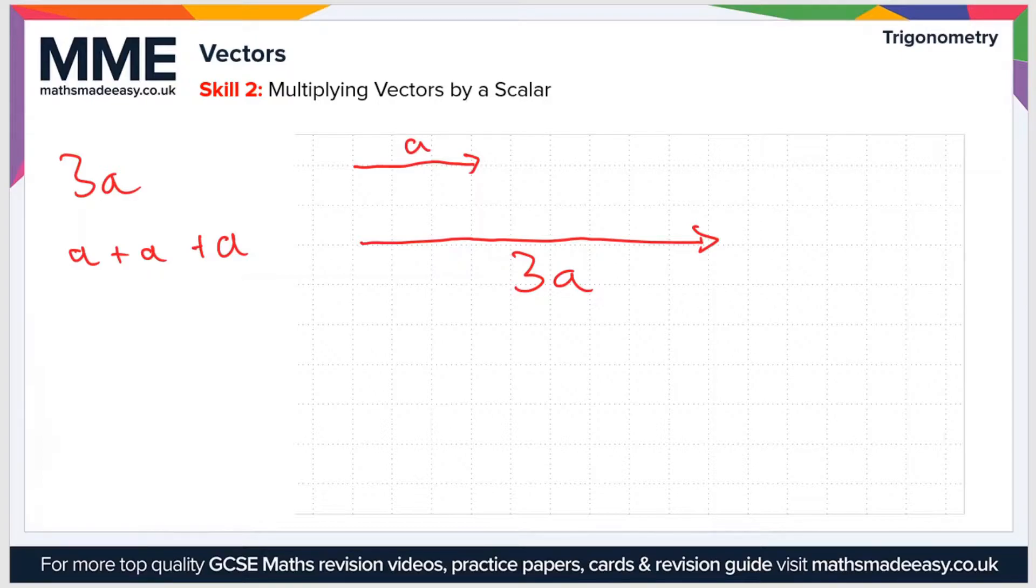What about a more complicated vector then? If we bring back B, and if you remember the vector A plus B, it looked like this. That was A, that was B, and then A plus B was the diagonal. Let's say we wanted to have the vector 2 times A plus B. If you expand these brackets out, you can see that is the same as 2A plus 2B.